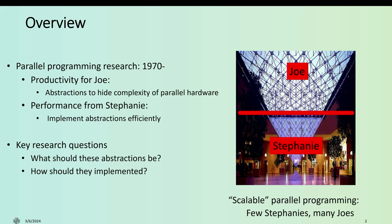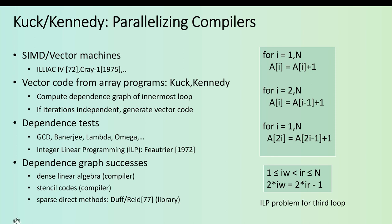These are the research questions that have animated my field and Ken Kennedy's field for many years: what should these abstractions be, and how should they be implemented? Back when Ken was in his prime — the 70s, 80s, 90s — he and David Kuck at the University of Illinois at Urbana-Champaign had a particular approach to solving this problem, which we can call parallelizing compilers. Ken made many contributions, but I think this is one of his key contributions. This idea goes back to the early 70s, when people started designing and implementing SIMD and vector machines like the Illiac-4 and Cray-1.